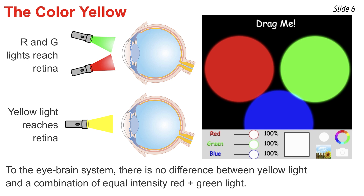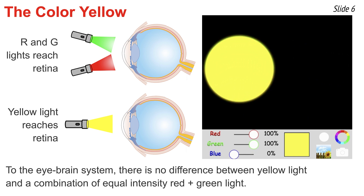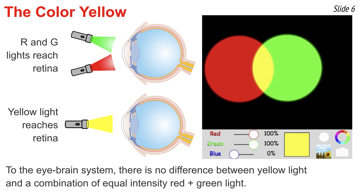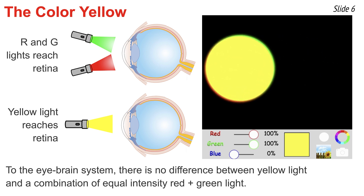To demonstrate the relationship between red and green light and the color yellow, let's consider this light box simulation with three colored lights: red, green, and blue. We'll turn the blue off for now. Then we'll take the green light and overlap it with the red light. Where they overlap, you observe yellow. While there are two physiological responses — red and green — there's only one psychological response, and that is the color yellow.